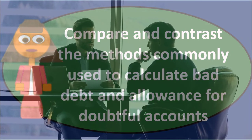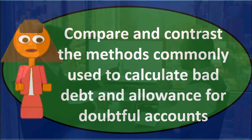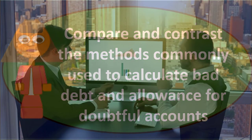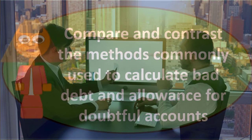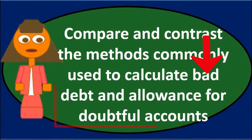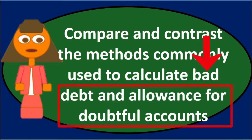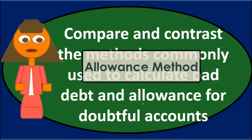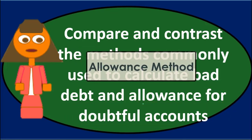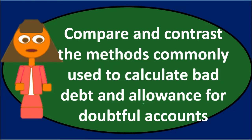We want to tell readers of the financial statements how much people owe us, and also how much of that we believe is uncollectible. That is what the allowance for doubtful accounts is used for. If we see an allowance for doubtful accounts, it means we are using the allowance method, not the direct write-off method, which waits until the period of non-collection to record bad debt.